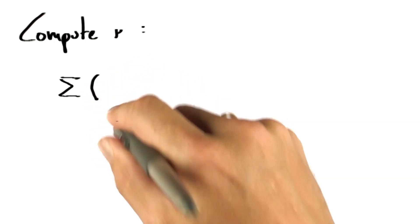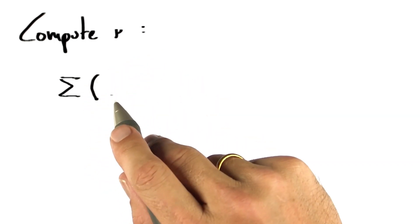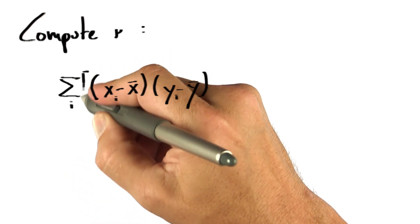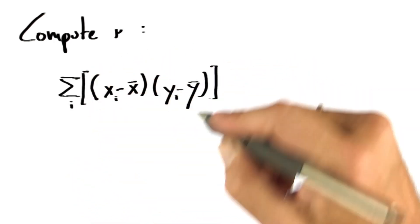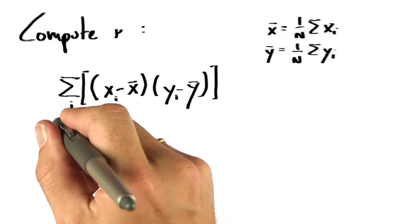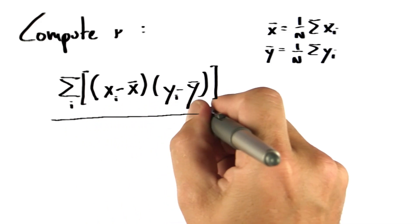My favorite way to compute it is very similar to the way we computed b in linear regression. It looks at the sum of all data points and takes the product of xi minus the mean x and multiplies for each data point this with yi minus the mean of y.